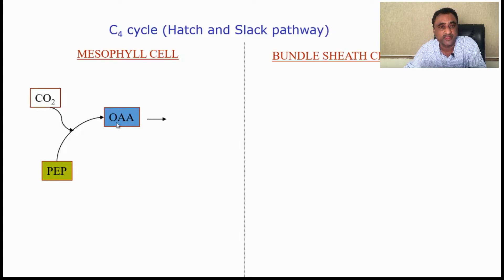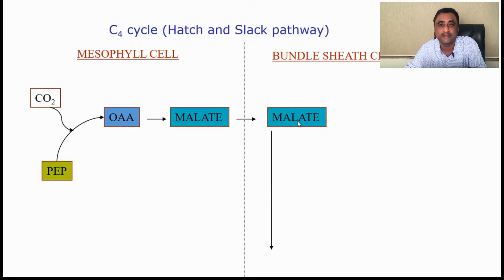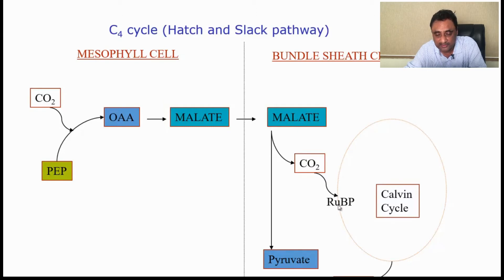This oxaloacetic acid gets converted into malic acid, and the malic acid is transferred to the bundle sheath cell. In the bundle sheath cell, malate undergoes decarboxylation — the 4-carbon compound releases one CO2, and the 3-carbon compound pyruvate is formed. This single CO2 is accepted by RuBP within the bundle sheath cell, the Calvin cycle runs, and eventually starch is formed.